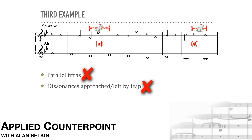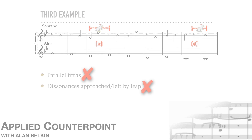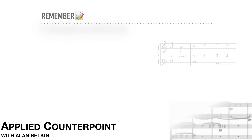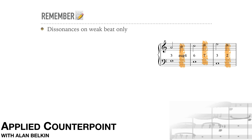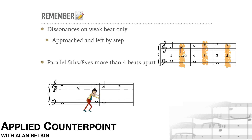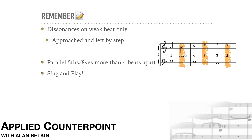If you don't hear these things clearly right away, give it time. Part of the reason for doing these exercises is to refine your ear for such details, and that requires a lot of practice. Remember: dissonances only on the second note of the bar; dissonances must be approached and left by step; parallel fifths or octaves should normally be more than four beats apart. Sing and play.